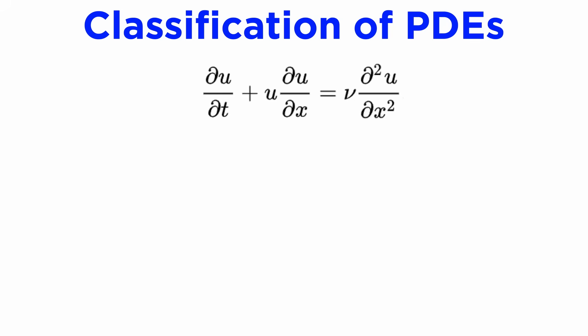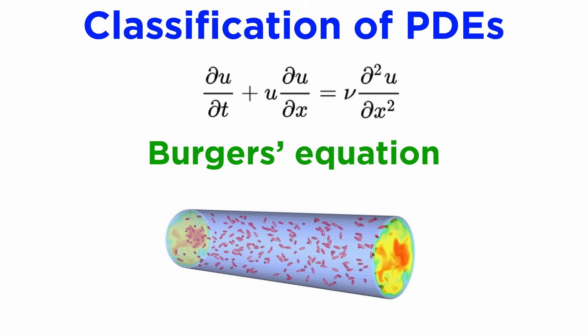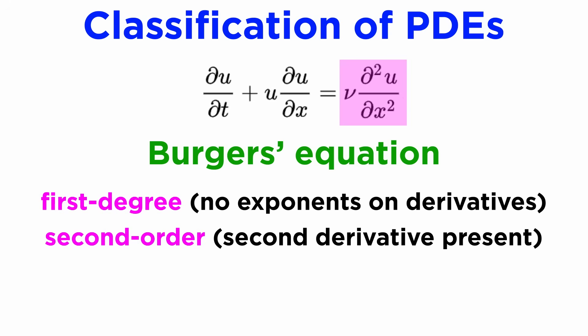Let's take a look at some more examples. Here we have a PDE known as Burger's equation, and it's used to model diffusion of particles in a flowing fluid. We can see that it is a second-order PDE because of the second derivative term on the right,